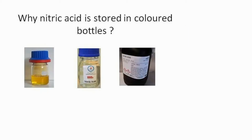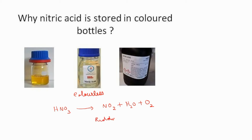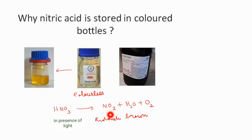What is the color of nitric acid? In its pure form, nitric acid is a colorless liquid. But when exposed to sunlight for a long time, it undergoes a decomposition reaction to form nitrogen dioxide, water, and a little bit of oxygen. Nitrogen dioxide has a reddish-brown color. This reddish-brown gas dissolves in the acid, and as a result the acid appears yellow after some time. That is why nitric acid is stored in dark colored bottles.